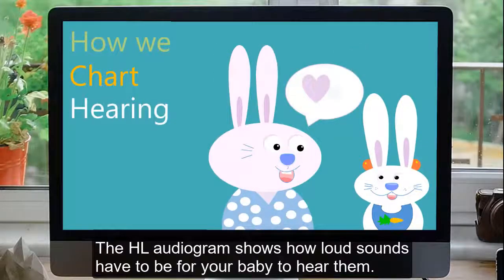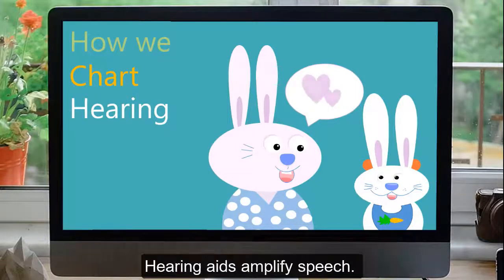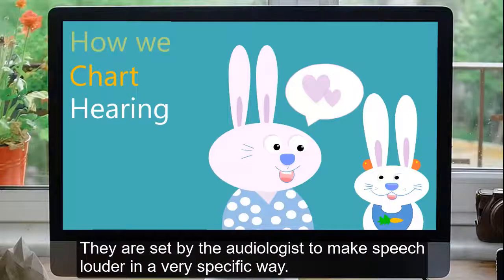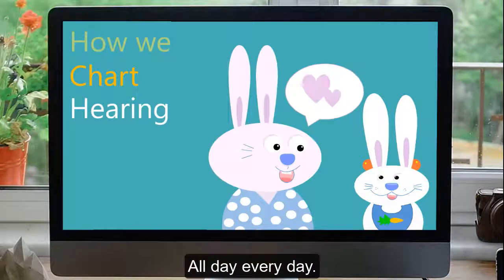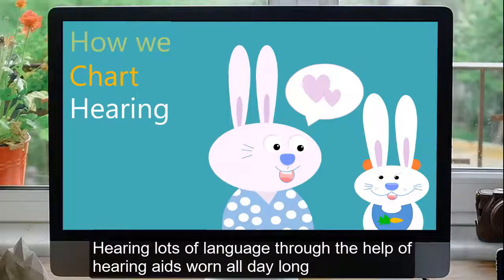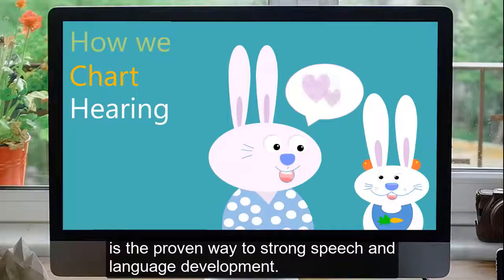The HL audiogram shows how loud sounds have to be for your baby to hear them. Hearing aids amplify speech. They are set by the audiologist to make speech louder in a very specific way, in a way that helps your baby to hear language well and then learn language well all day, every day. Hearing lots of language through the help of hearing aids worn all day long is the proven way to strong speech and language development.